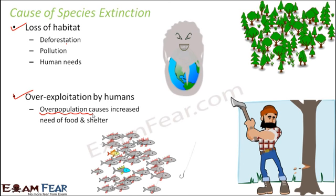Due to human benefit, commercially important species are grown at the cost of losing other species. For example, if human beings feed on fish, they want to grow more and more fish. When too many fishes come into the picture, they start eating up small aquatic insects and other small organisms present in water, which may cause those organisms to become extinct. Furthermore, continued use of pesticides or insecticides for the breeding of commercially important fishes can kill several other aquatic species. This is how over-exploitation by humans can cause extinction.